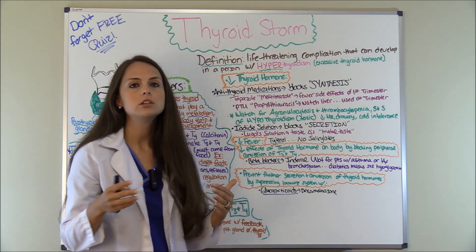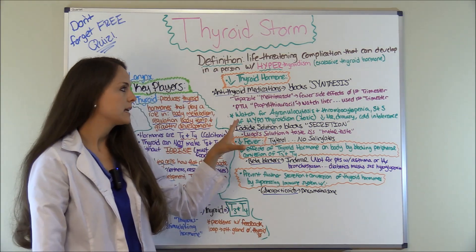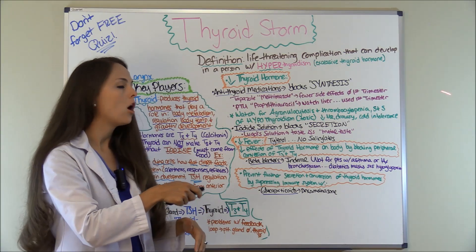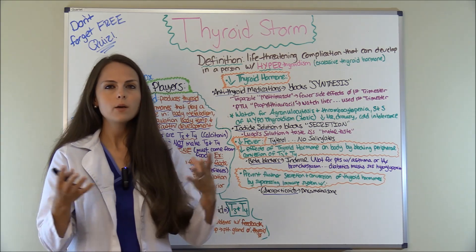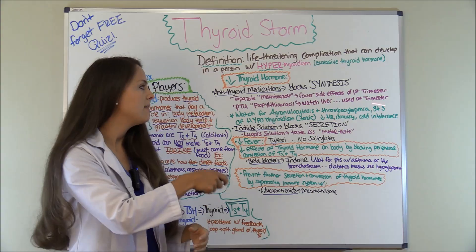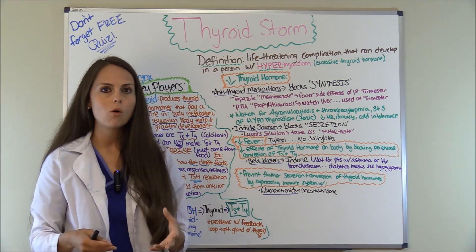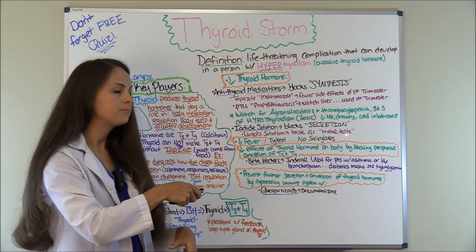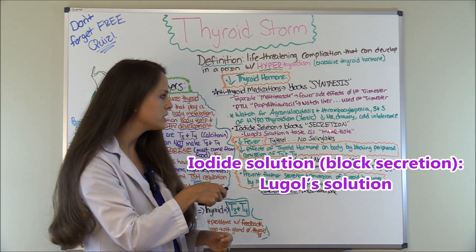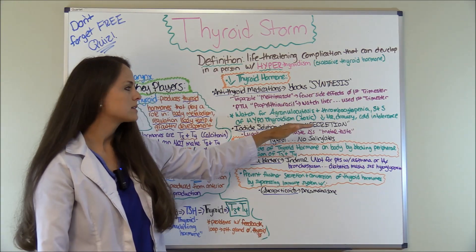Main dangerous side effects with both of these medications: watch for agranulocytosis and thrombocytopenia. Also watch for signs and symptoms of hypothyroidism — because if you give too much antithyroid hormone, they can become toxic and start presenting with signs like decreased heart rate, bradycardia, drowsiness, and cold intolerance. Another medication given is iodide solution, also known as Lugol solution, which works to block the secretion of thyroid hormones. So antithyroid medications block the synthesis; iodide solution blocks the secretion. Side effects of iodide solution include taste changes, like a metallic taste in the mouth.